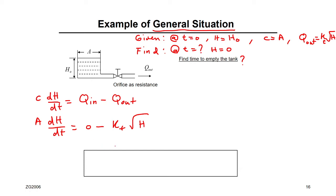How are we going to solve this? Take all the variables of H on one side and time on the other side, then integrate both sides. So we get: A·dH on one side.